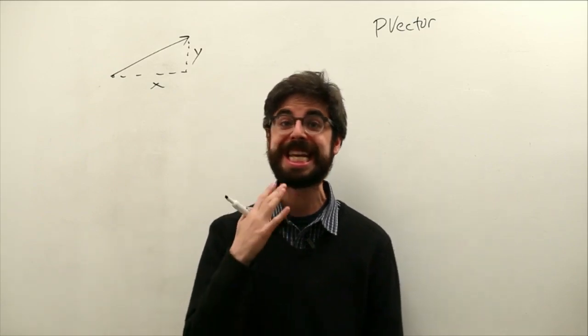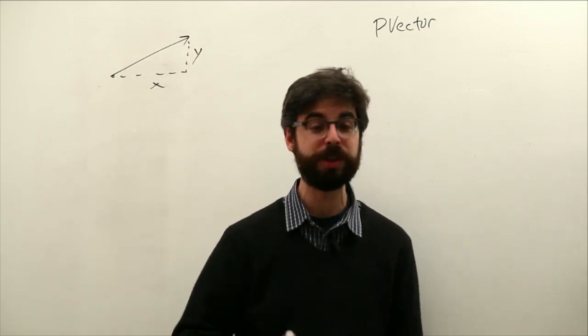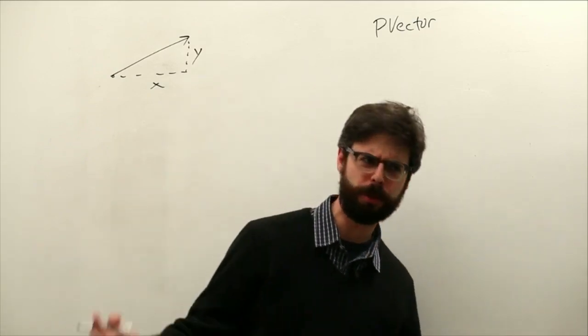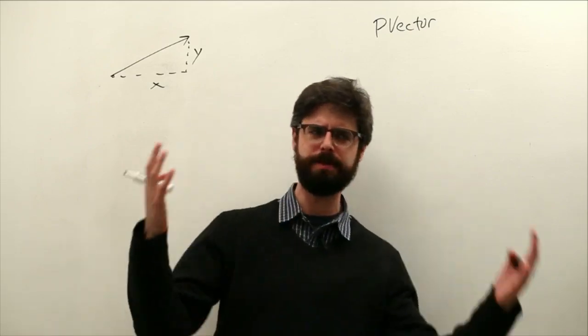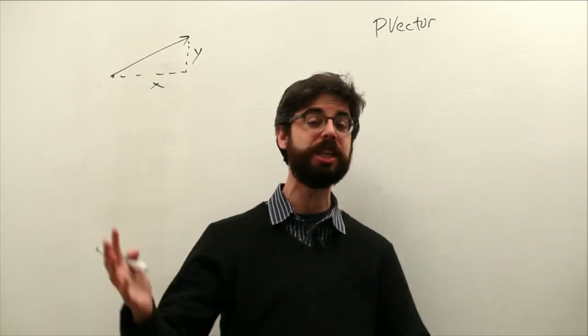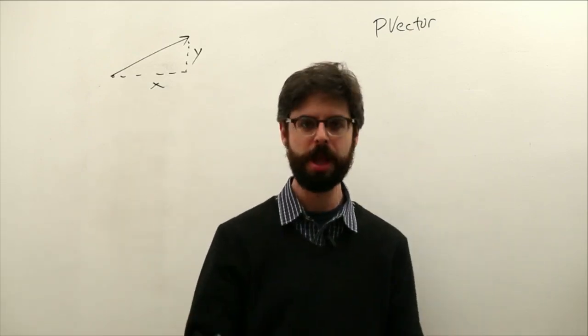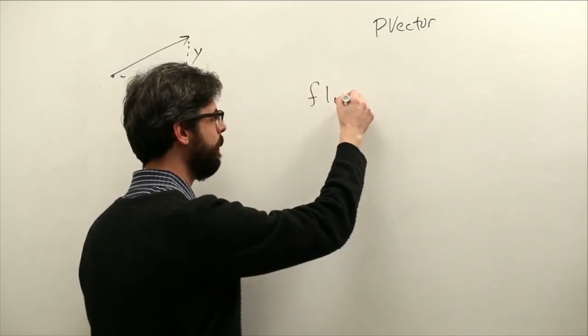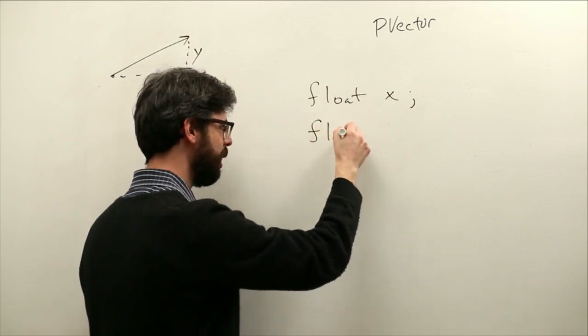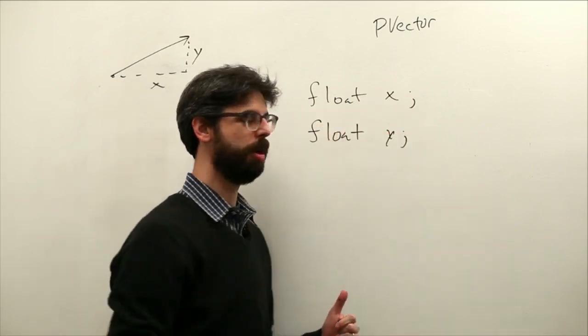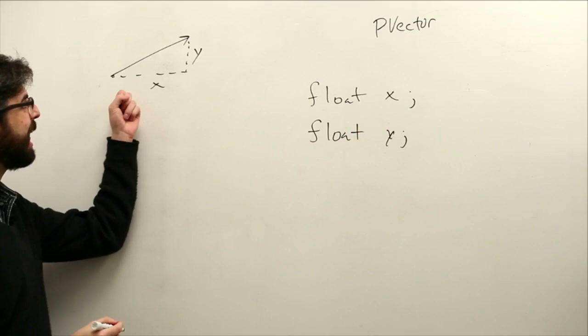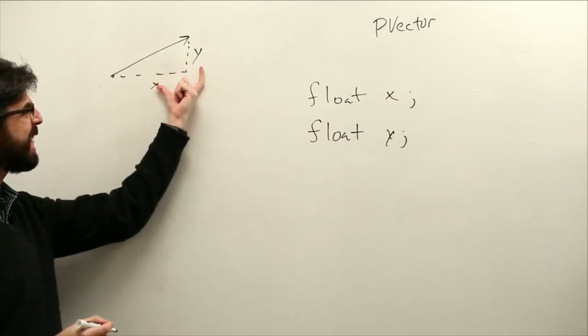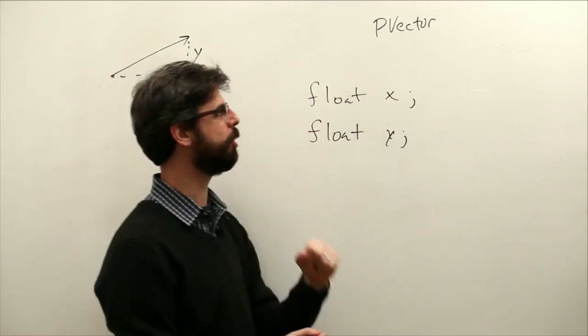So this is what we're going to do. We need to get into actual vector math. What does it mean to add vectors, multiply, dot product, magnitude, normalize, all these functions we're going to get to. But first, I just want to look at something really basic. What if we have a program that has an x and a y variable? What if we want to store those x's and y's together in one vector object?